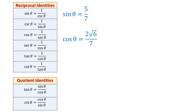Here to the left, we have the reciprocal identities and the quotient identities. The first two reciprocal identities tell us that sine of theta is 1 over cosecant of theta, and cosecant of theta is 1 over sine of theta. So the sine and cosecant functions are reciprocals of each other. This means that if we have the value of sine and we need the value of cosecant, we just have to flip this fraction. So cosecant of theta equals 7 over 5.